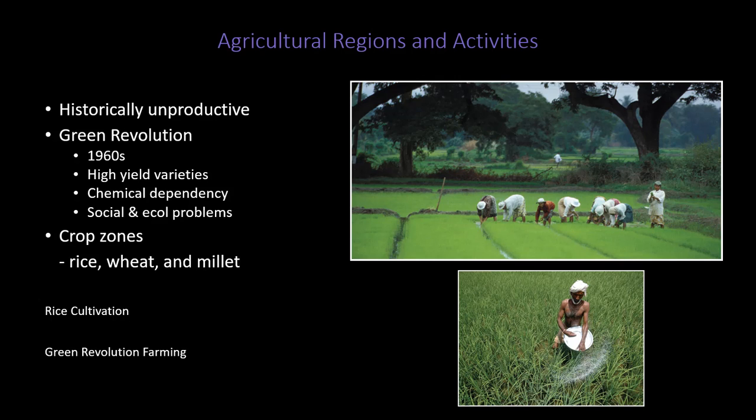A huge factor is the Green Revolution. Historically this region was really unproductive agriculturally, especially compared to East Asia. A big concern is how they will continue to feed their population. With the Green Revolution, they took a very unproductive region and introduced high-yield varieties — technology allowed selection of high-yield wheat, rice, millet, and sorghum, which is a cheap, easy grain that doesn't require a lot of water input.